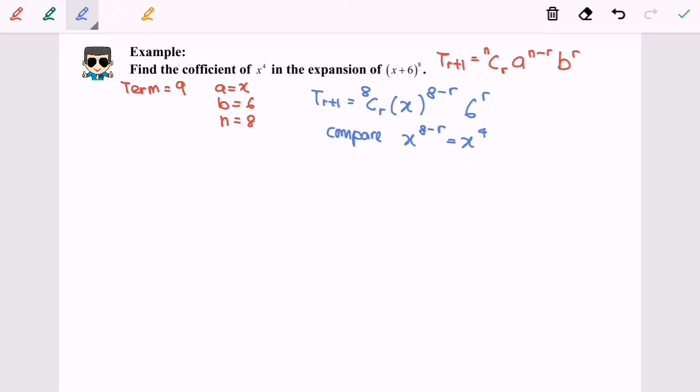By comparing the indices, 8 minus r equals 4, so r will equal 4.